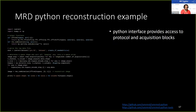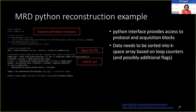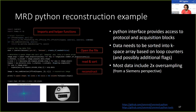Here's a basic example reconstruction of an MRD file using the ISMRM-RD Python interface, which provides access to the MRD protocol as well as to the individual acquisition blocks. There are some imports and helper functions, and then with the ISMRM-RD dot dataset command we can open the file. We then need to sort each line of k-space by reading each line with the read_acquisition method and sorting it into a k-space matrix based on line counters. After running the reconstruction we get an image — in this case the field of view in the readout direction is large because we're dealing with oversampled data, so we have two times oversampling.